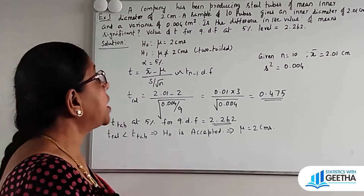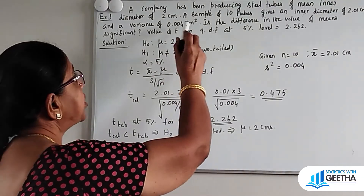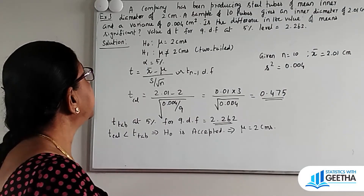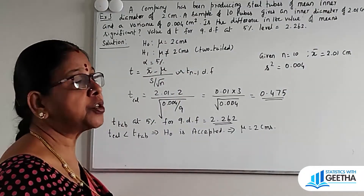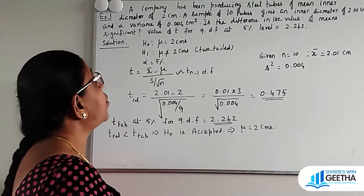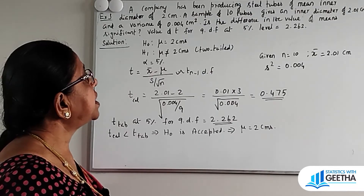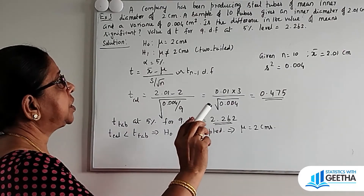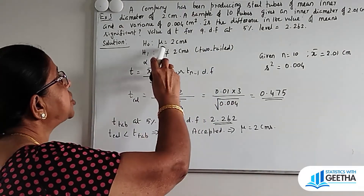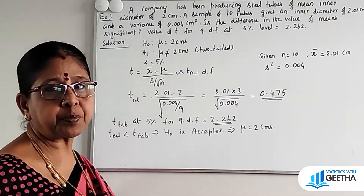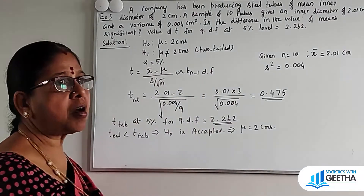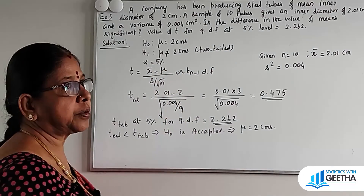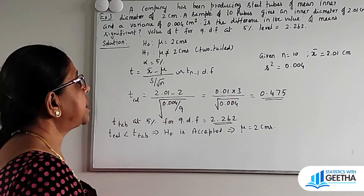Example 3: A company has been producing steel tubes of mean inner diameter of 2 cm. A sample of 10 tubes gives an inner diameter of 2.01 cm and a variance of 0.004 cm squared. Is the difference in the value of means significant? T table value for 9 degrees of freedom at 5% level is 2.262. H0: mu equal to 2 cm. H1: mu not equal to 2 cm. Alpha equals 5%.